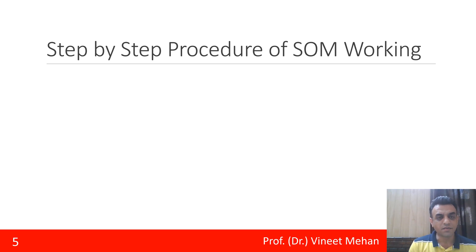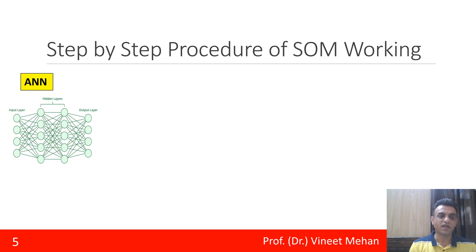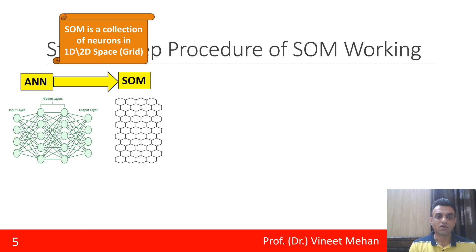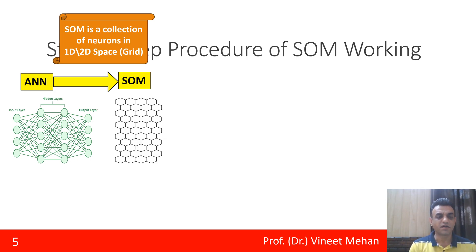Now the step-by-step procedure of how SOM works: first of all, we have an ANN — artificial neural network — with an input layer, hidden layers, and output layer. This ANN is then converted into a SOM. SOM is a collection of neurons in the form of a one-dimensional or two-dimensional grid. In this image, you can see that we have depicted it in the form of a hexagon shape, which is just a representation of the artificial neural network.